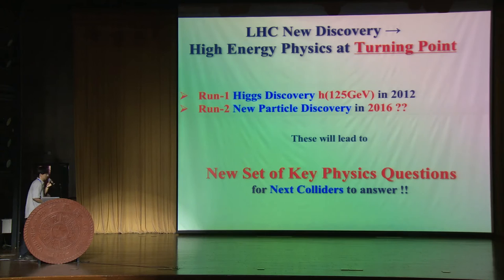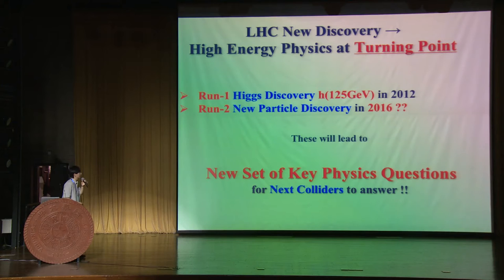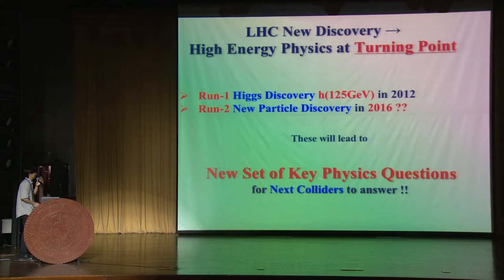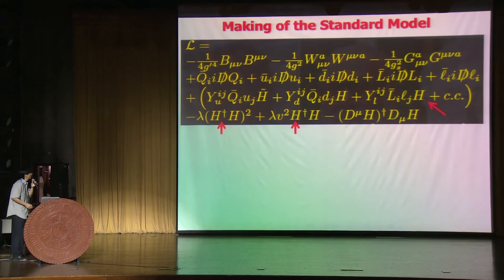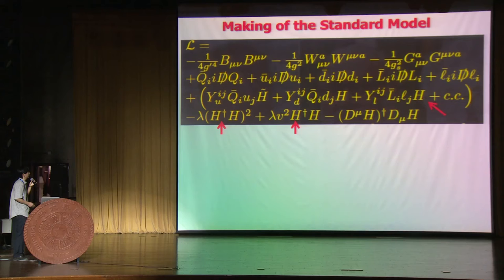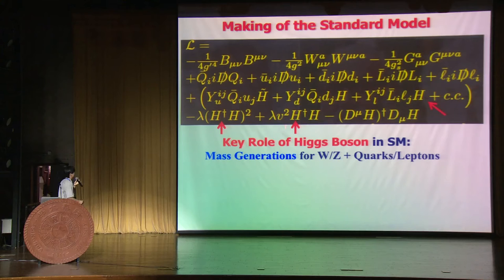With this, we would expect a new set of key questions which will have sharp differences from what happened before 2012. That will lead us to key physics questions for the LHC collider structure, with possible interface with cosmology and quantum gravity. The standard model is really striking — the whole Lagrangian fits in four lines, and the last two lines are all connected with the Higgs boson for all mass generation, including the W, Z, and quarks.